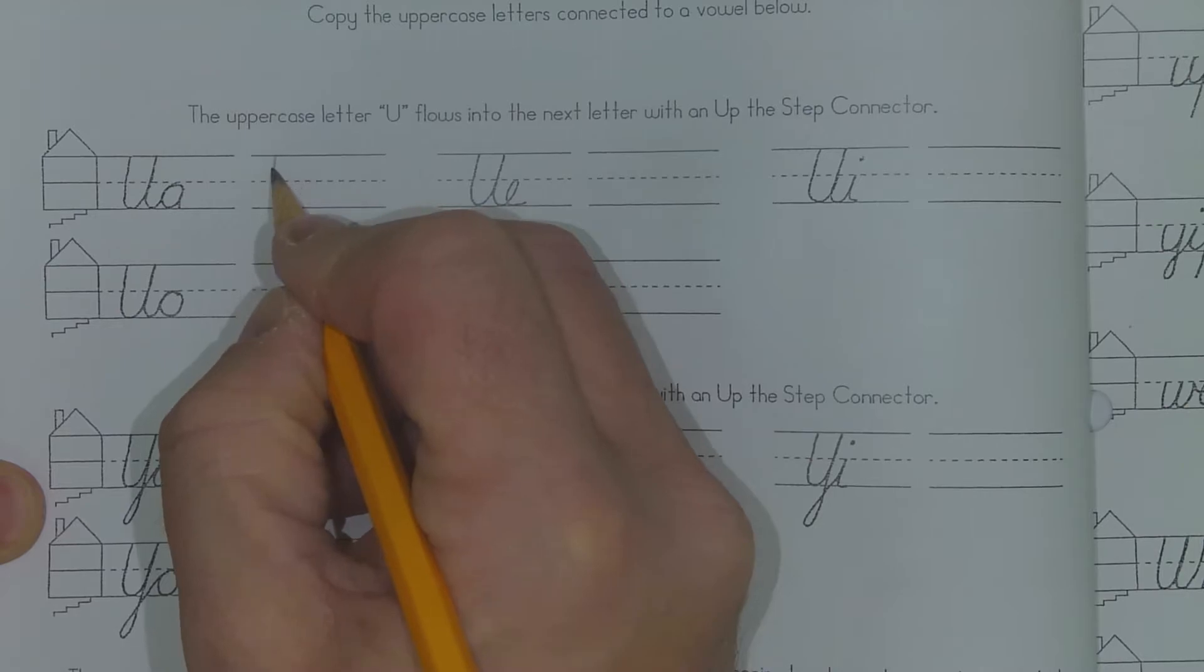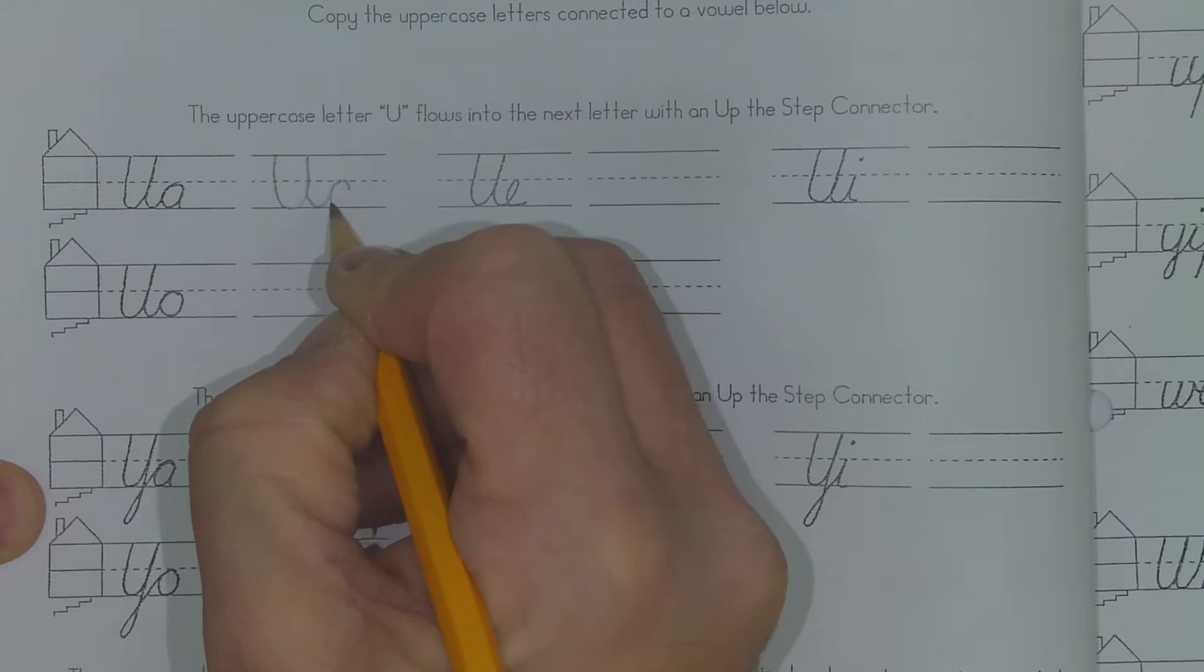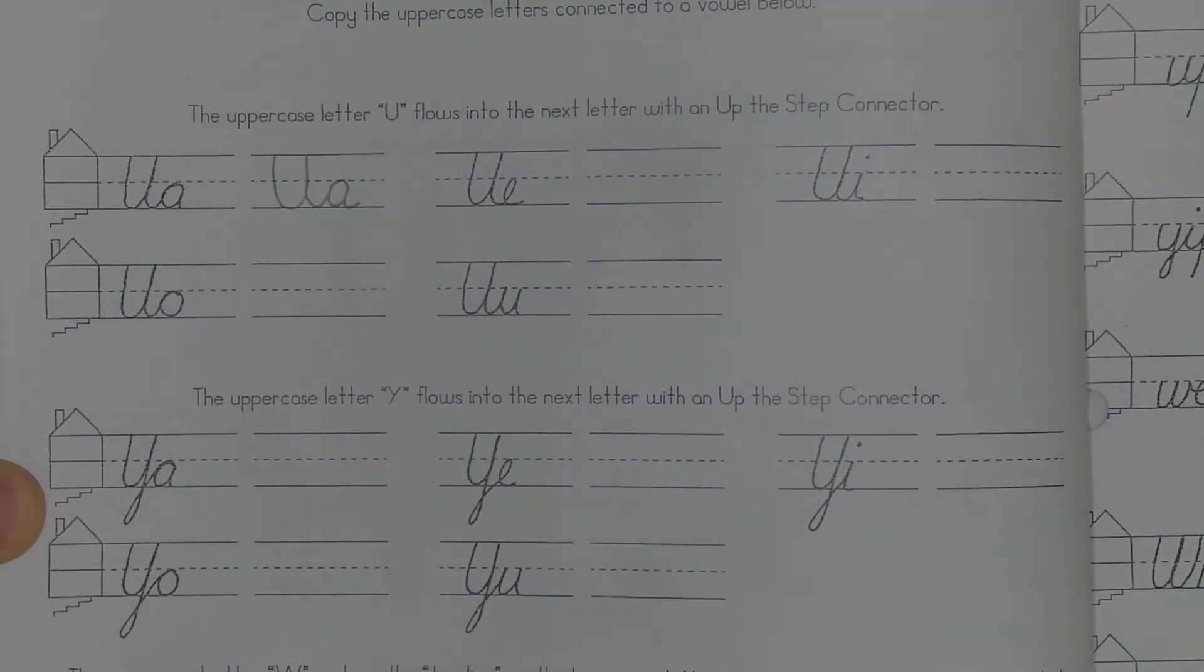Anyway, when I connect my U and my A, I make my U-turn, I follow my line back down, I go into my C-stroke, and then I just finish off my A. Not too difficult. Same thing with every letter.